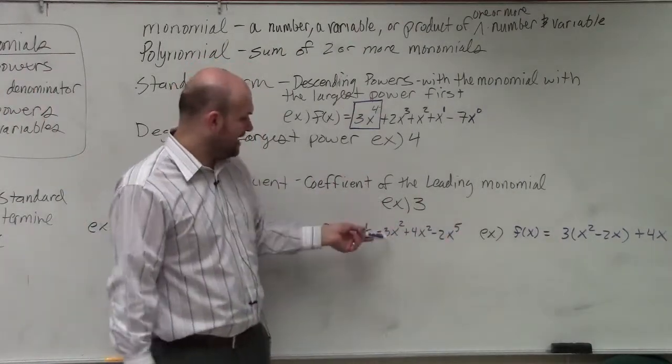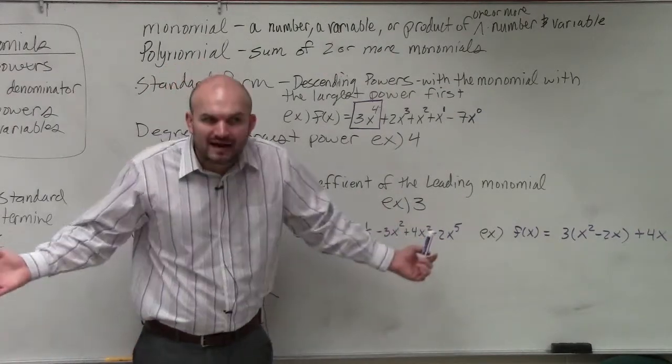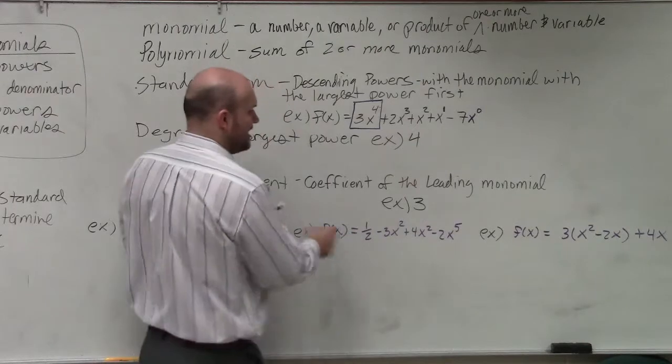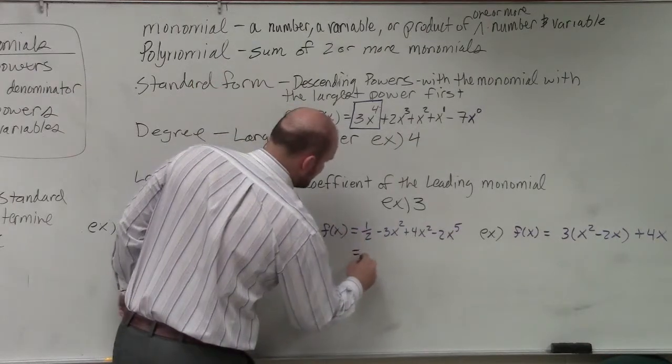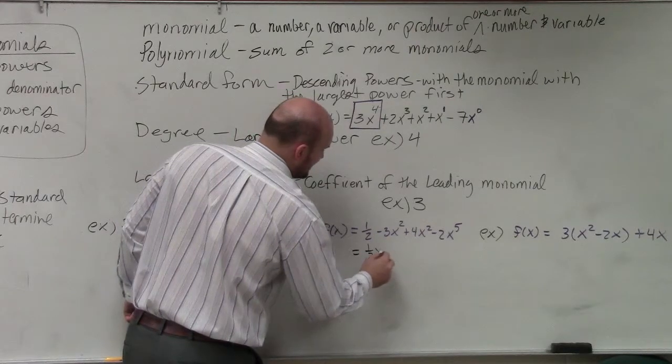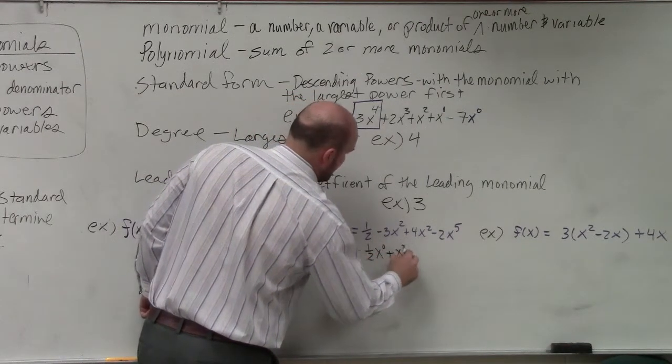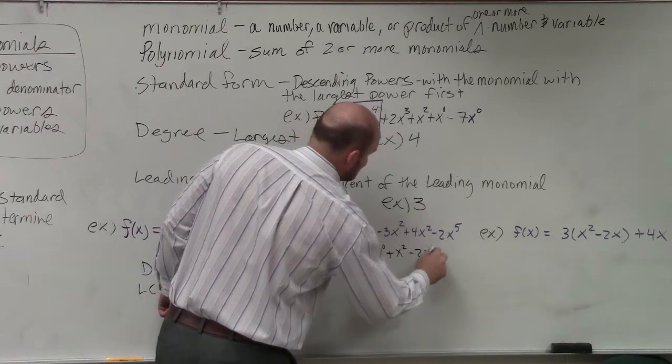So in this example, I have negative 3x squared plus 4x squared. That just simplifies to x squared. Then I have equals 1 half. I'm going to write this as a power. So that's going to be x to the 0 power plus x squared minus 2x to the fifth.